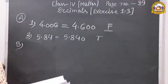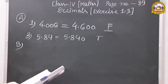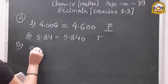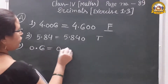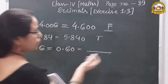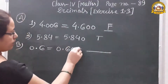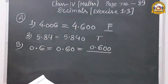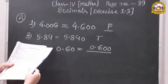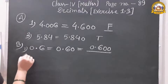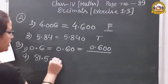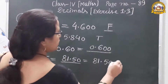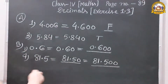Question number five — fill in the blanks with equivalent decimals. Zero point six equals zero point six zero, equals zero point six zero zero. We add zeros at the end for equivalence. Fourth: eighty-one point five equals eighty-one point five zero, equals eighty-one point five zero zero. These are all equivalent decimals.